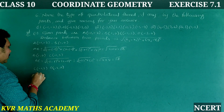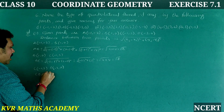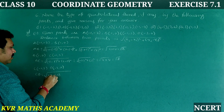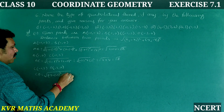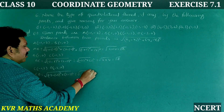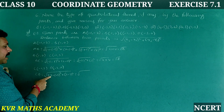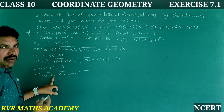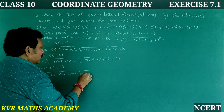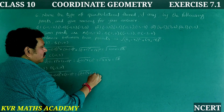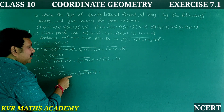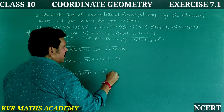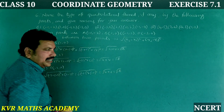Next, find CD. C is (-1, 2) and D is (-3, 0). CD = root of (-3 minus (-1)) whole square plus (0 minus 2) whole square = root of (-2) squared plus (-2) squared = root of 4 plus 4 = root 8.